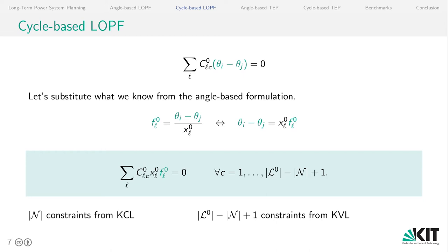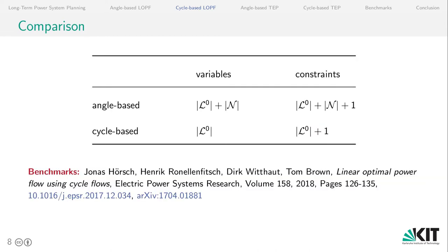And this is very neat, because we still have the N constraints from Kirchhoff's current law, and we have exactly L minus N plus 1 constraints from Kirchhoff's voltage law. And together we have L plus 1 constraints. So when we compare the angle-based to the cycle-based formulation, we get both fewer variables and fewer constraints. And in previous research, this formulation has been shown to outperform the angle-based formulation by far.